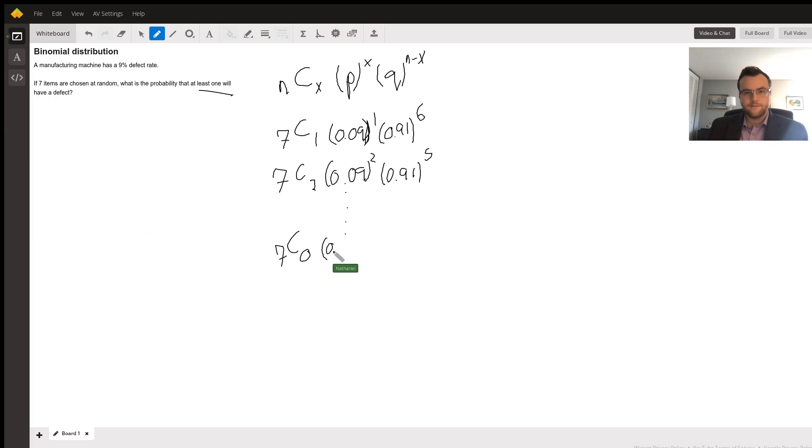So that is multiplied by the probability of all of them not having a defect. So this is 0.91 to the 7th power. So we will find this value, which is essentially, this turns into a 1 because it's to the 0 power. You can find the nCx function on the calculator, TI-84. It is math.